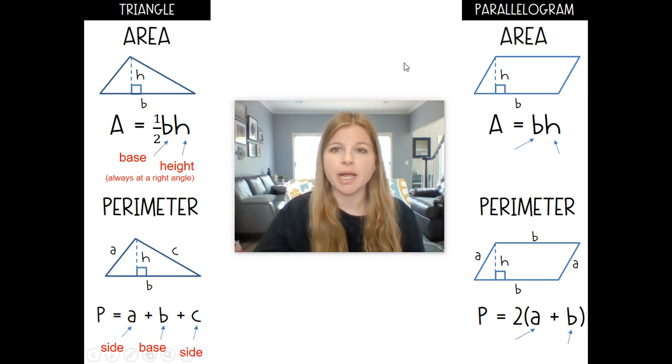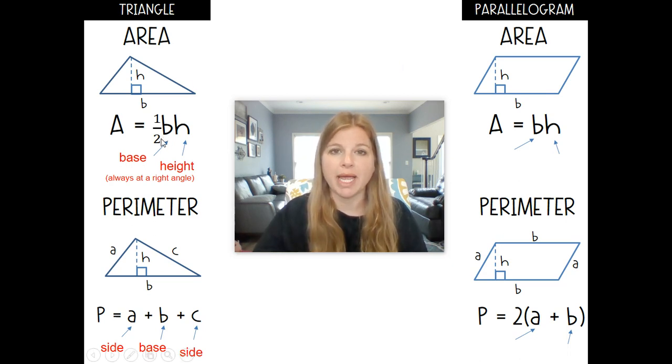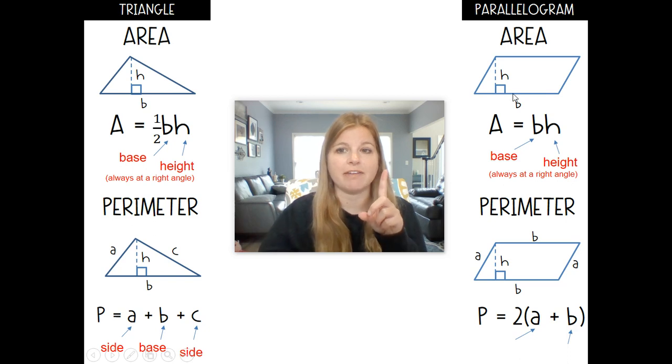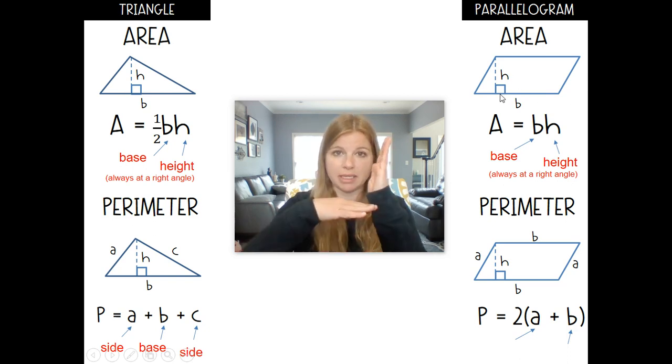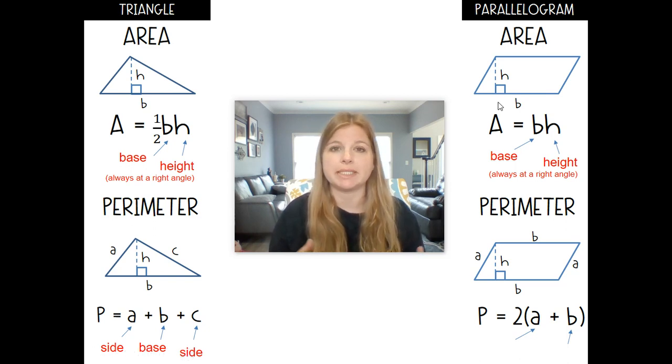A parallelogram is basically two triangles together. So if the area formula for a triangle is one-half base times height, and I take a triangle and I simply double it, well, one-half times two is one. And so the formula is just base times height. And I have my base, and my height is always at a perpendicular 90-degree angle. And those would be the values, and I just simply multiply them, kind of like the rectangle formula. Length times width. Parallelogram is base times height.